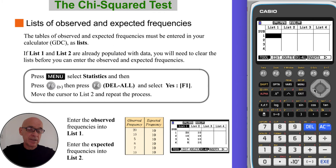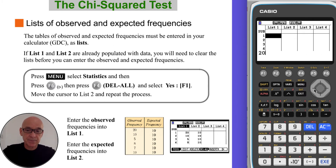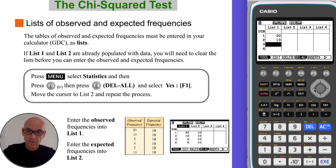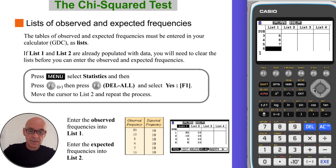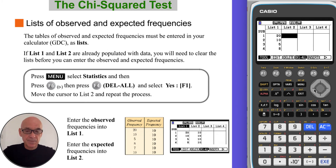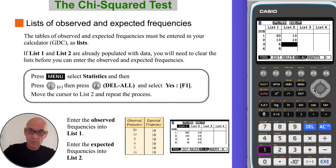We're now ready to enter the data into list 1 and list 2. Enter the observed frequencies into list 1: that's 20, 10, 5, 8, 7, 10. And enter the expected frequencies in list 2. Of course, being a uniform distribution, they're all 10.